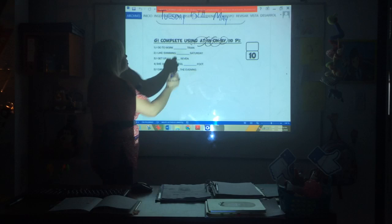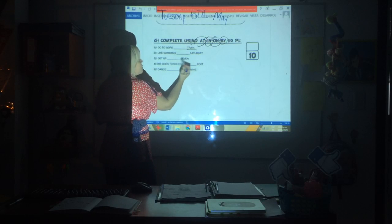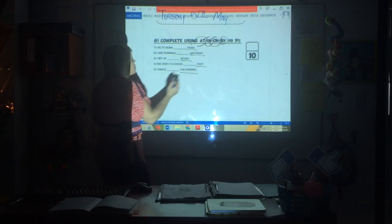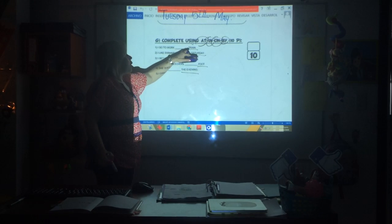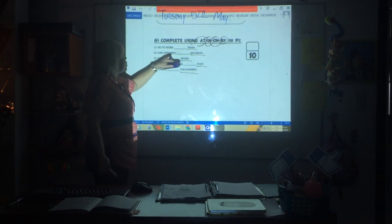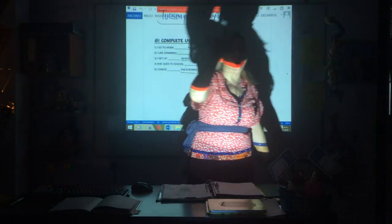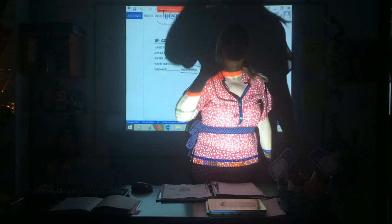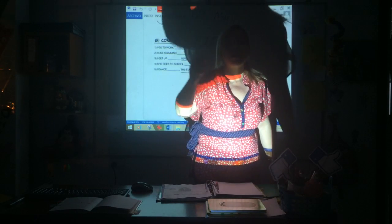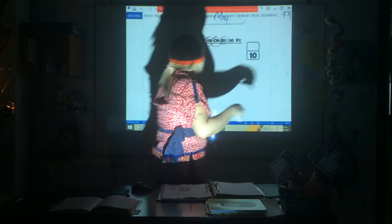Complete using at, in, on, or by. I go to work. First look: train, Saturday, seven o'clock, evening. I go to work by train. I like swimming on Saturday. Notice that 'on' goes before days. 'At' goes before hours. Evening, afternoon: in the evening, in the afternoon.